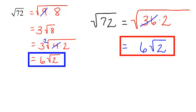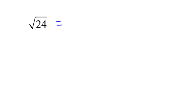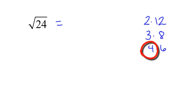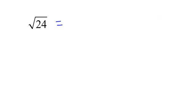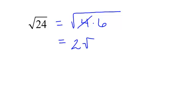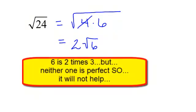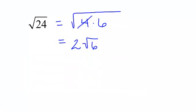The square root of 24. I can try 2 times 12, 3 times 8, or 4 times 6. 4 is perfect, so I break 24 into 4 times 6. 4 is perfect and comes out from underneath the radical as 2 — giving 2 radical 6. Radical 6 is 2 times 3, but that won't help me, so I'll leave it as radical 6.